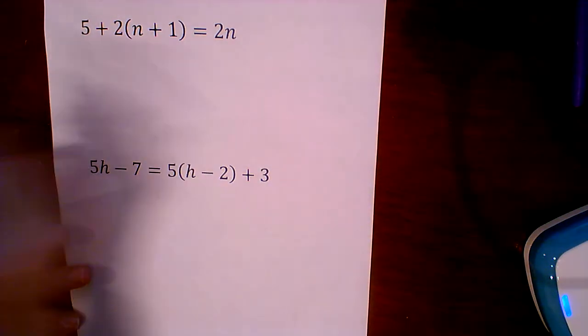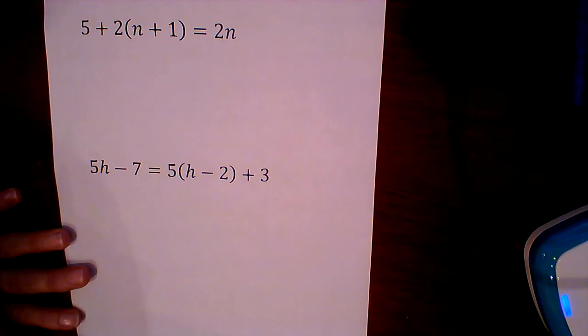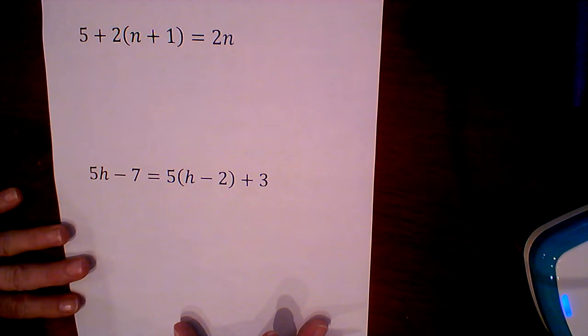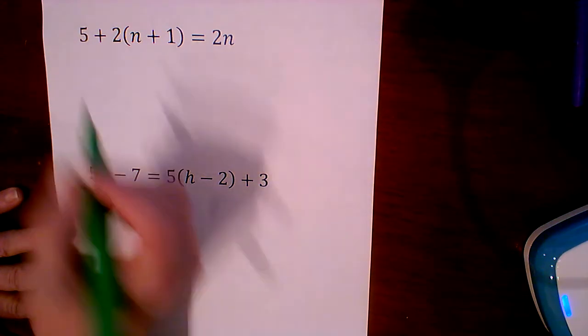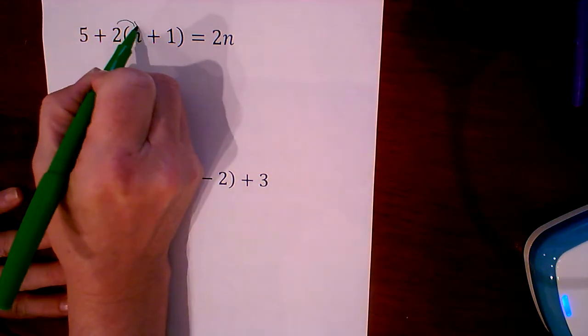Our first example is 5 plus 2 times the quantity n plus 1 equals 2n. So in order to solve this equation, we must first simplify the left-hand side of the equation by distributing the 2.